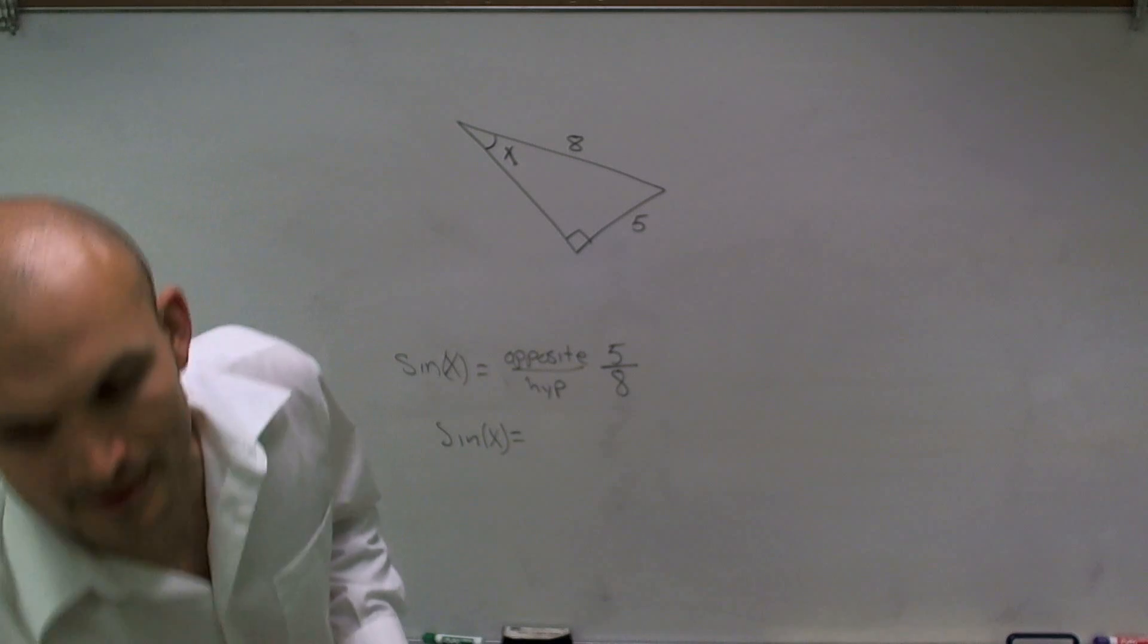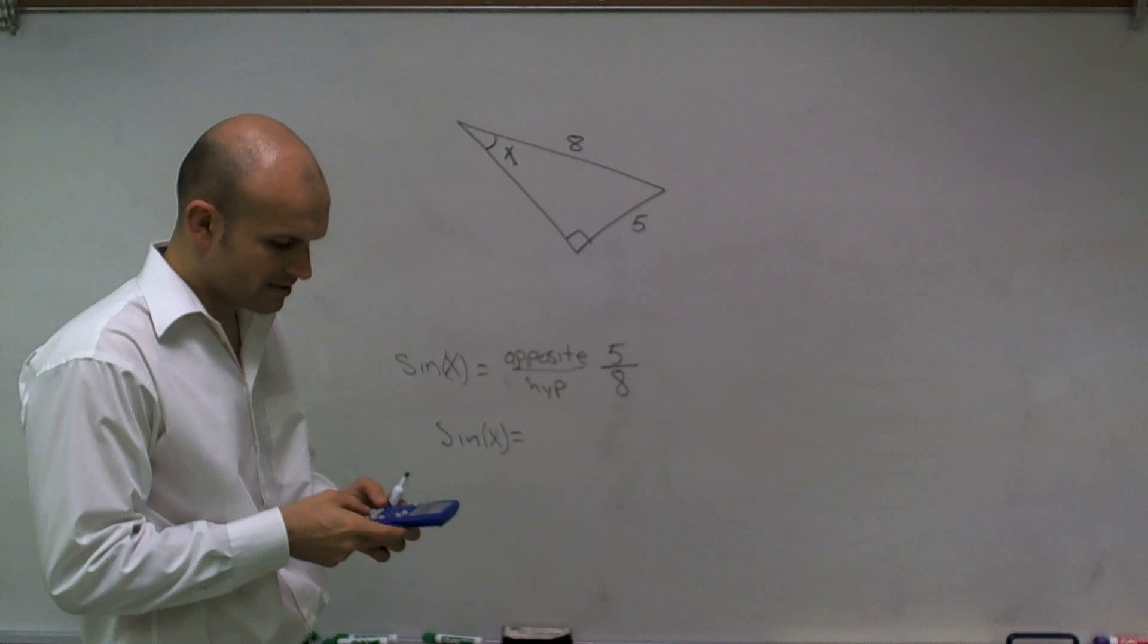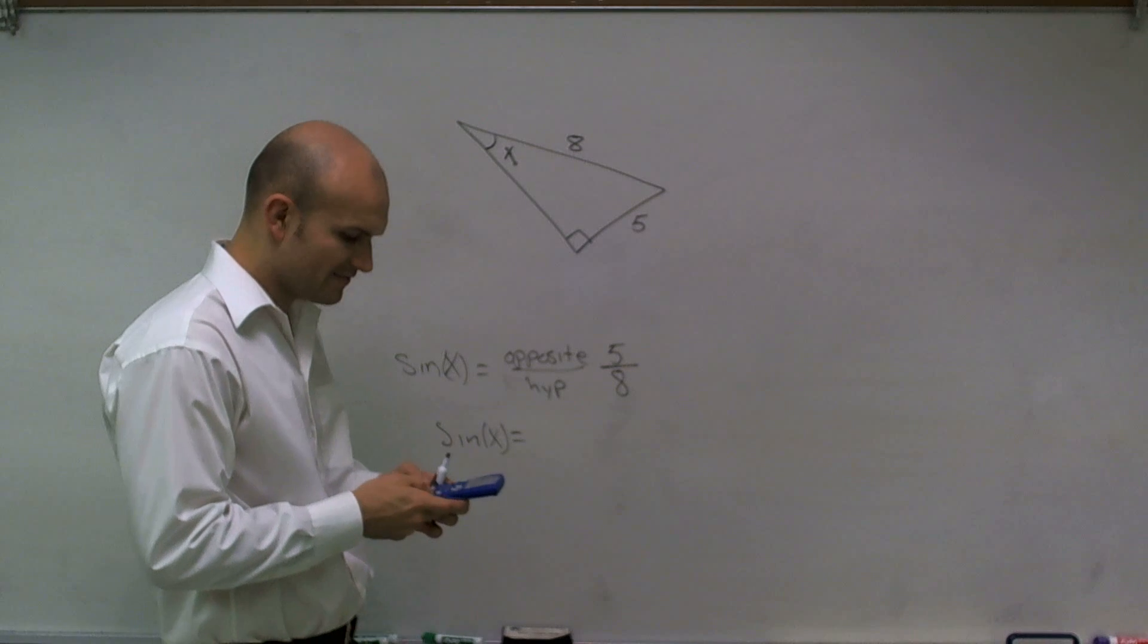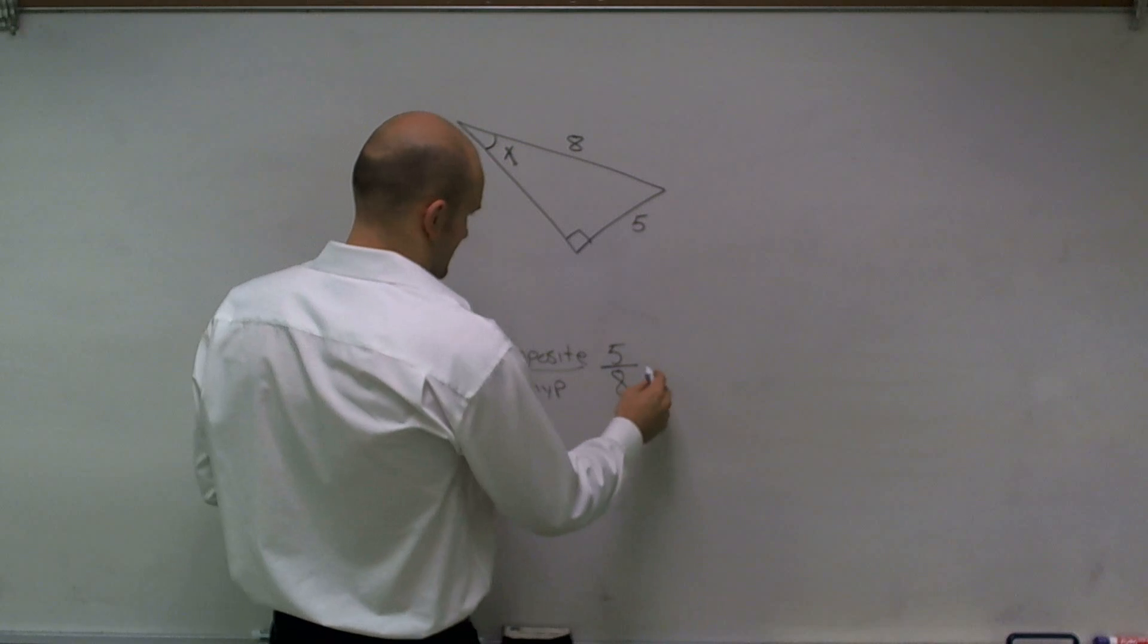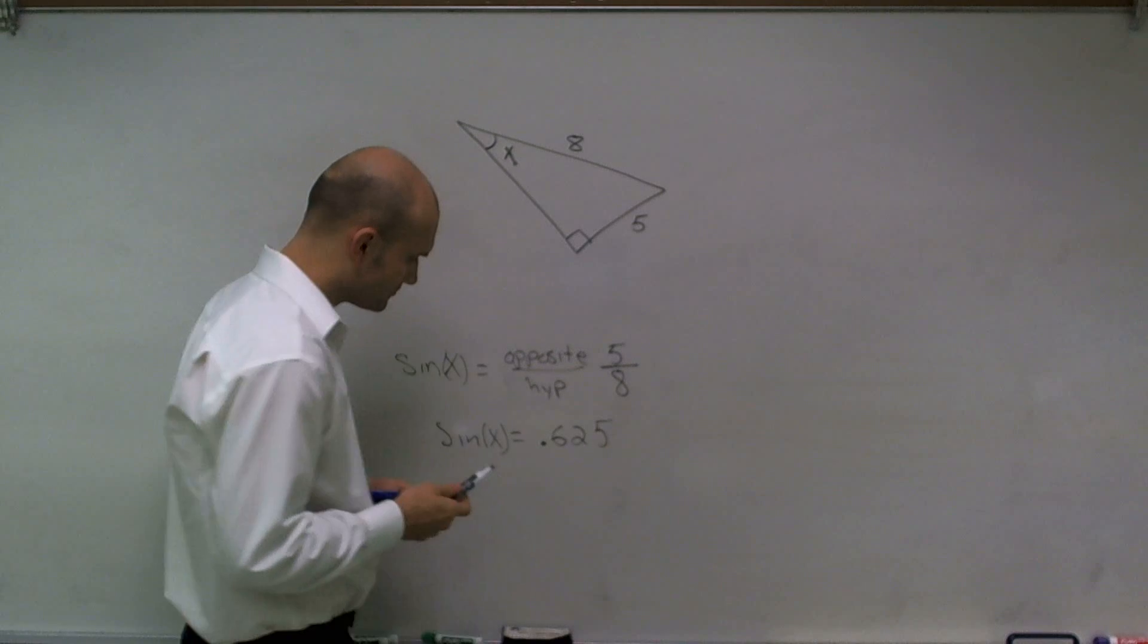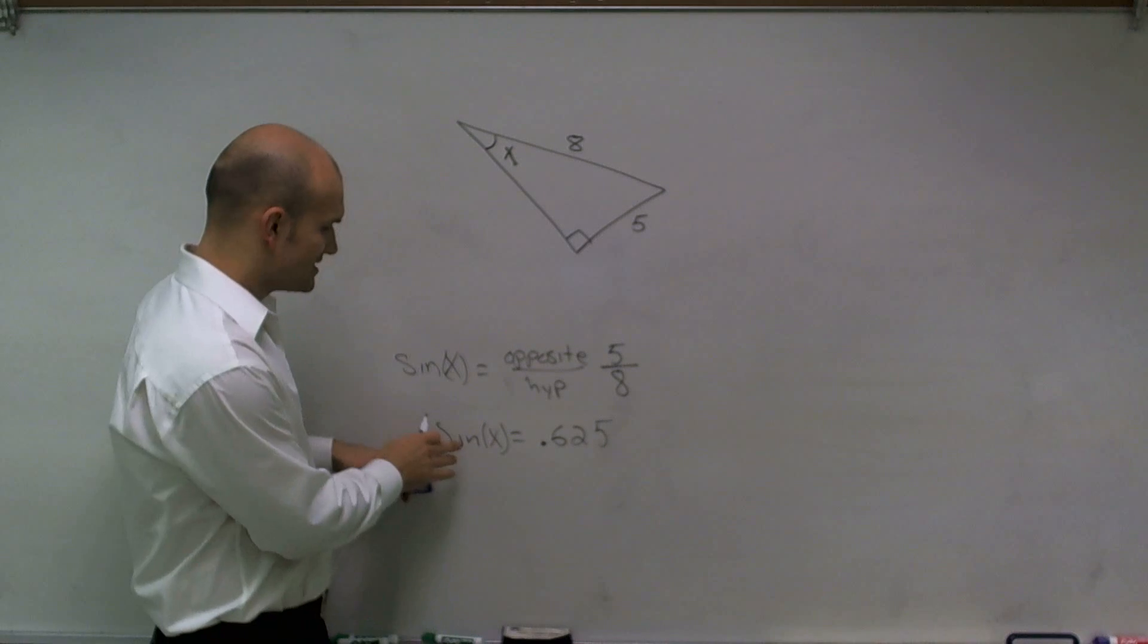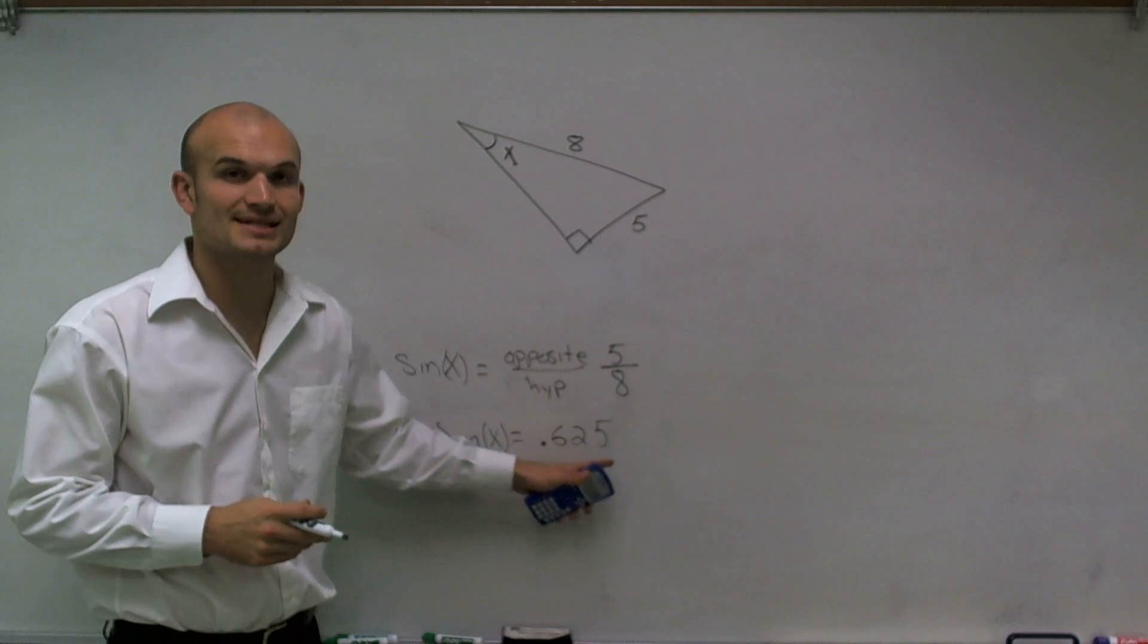Well, let's see if we can get a decimal approximation for that, just to show us what we're going to do. So I take 5 divided by 8, and I get 0.625. So what that says now is we have the sine of our angle x equals 0.625.